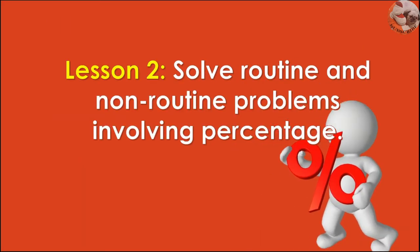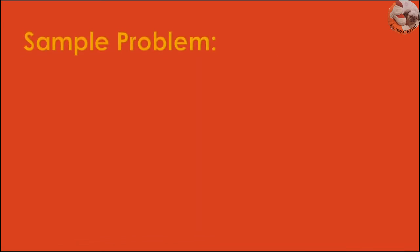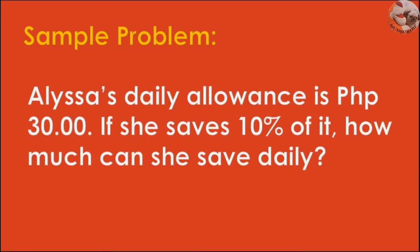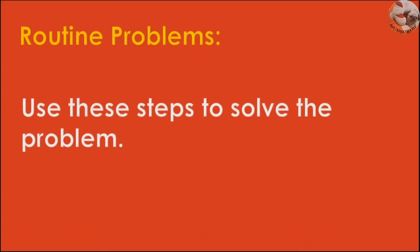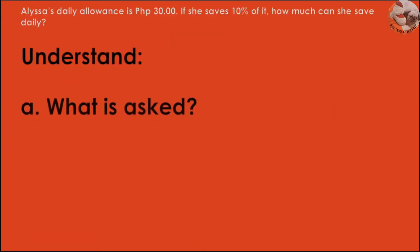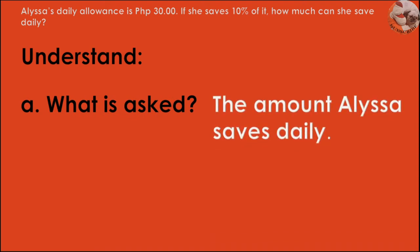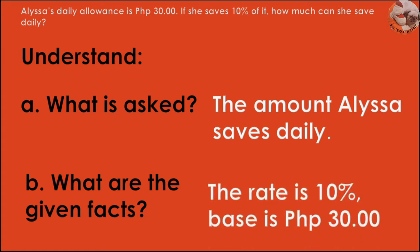Lesson 2: Solve routine and non-routine problems involving percentage. Sample problem: Alyssa's daily allowance is 30 pesos. If she saves 10% of it, how much can she save daily? To solve routine problems, use these steps. Understand — what is asked? The amount Alyssa saves daily. What are the given facts? The rate is 10% and the base is 30 pesos.